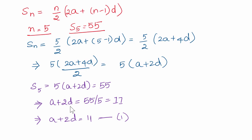In other words, a plus 2d equals 55 by 5, which is 11. In other words, a plus 2d equals 11. This is equation 1.